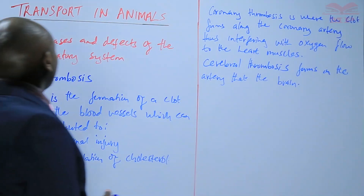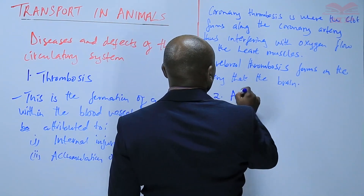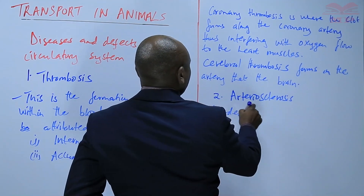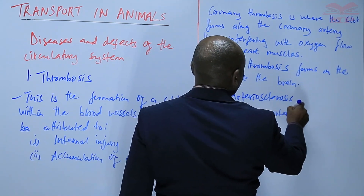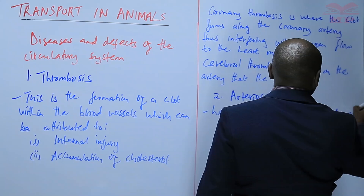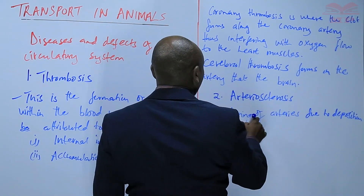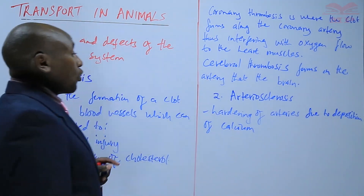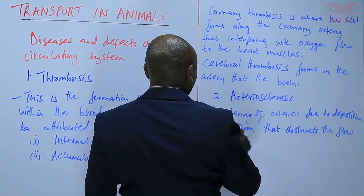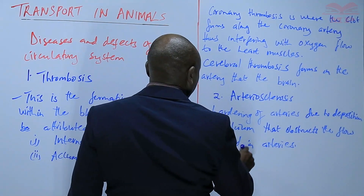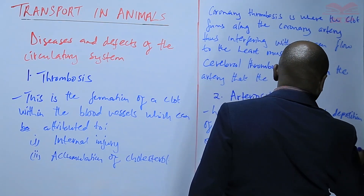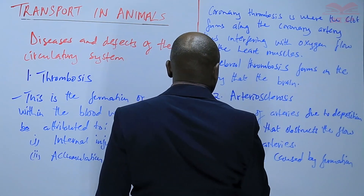The next disease we look at is called arteriosclerosis, and this is the hardening of arteries. The arteries harden due to deposition of calcium, a situation that obstructs the flow of blood within the arteries. It can also be caused by formation of clots in the arteries.